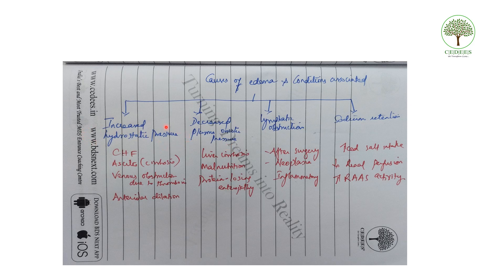The causes of edema are mainly increased hydrostatic pressure or decreased plasma oncotic pressure. Capillary hydrostatic pressure is an outward driving force, while plasma oncotic pressure is an inward force. When oncotic pressure decreases — due to plasma proteins, mainly albumin — fluid shifts from intravascular to tissue spaces. This occurs in liver cirrhosis, malnutrition, protein-losing enteropathy, and nephrotic syndrome.